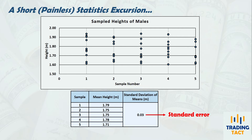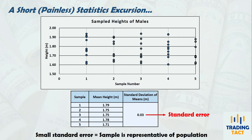Standard error tells you how far the sample mean deviates from the true population mean. The smaller the standard error, the more representative the sample will be of the overall population.